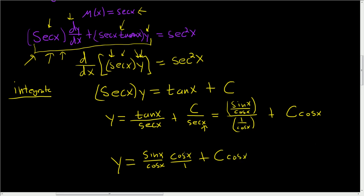And so it's just a little bit of simplification. So y is equal to sine x plus c times cosine x. And that is the final answer.